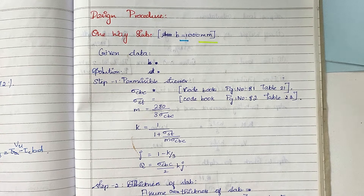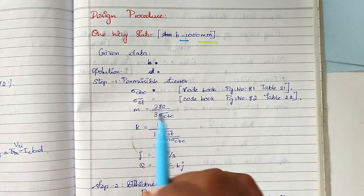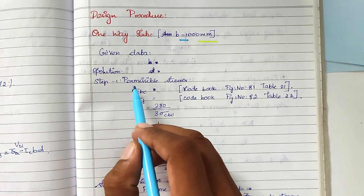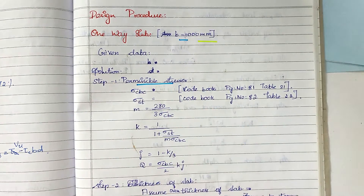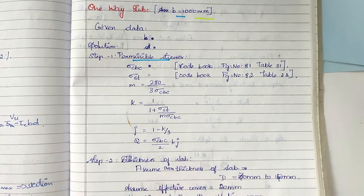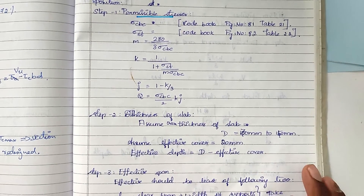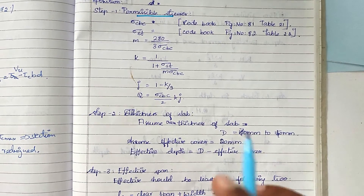Hello friends, welcome to Civil Engineering Exam. Today we are going to see the design procedure of a one-way slab using the working stress method. The first step is permissible stresses — we have to take the permissible stresses.